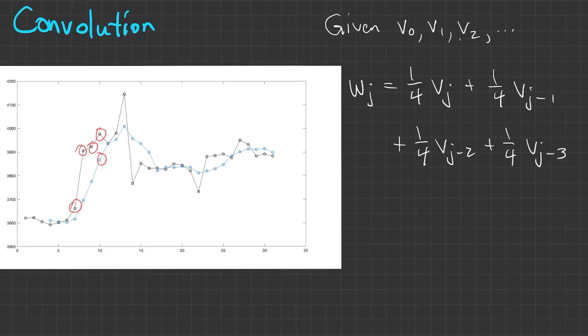We might want a fancier average that doesn't just give equal weight to every point. You might want to give more weight to the recent past. So we can just replace those one-quarters with some other sequence of values and write the whole thing with sigma notation.